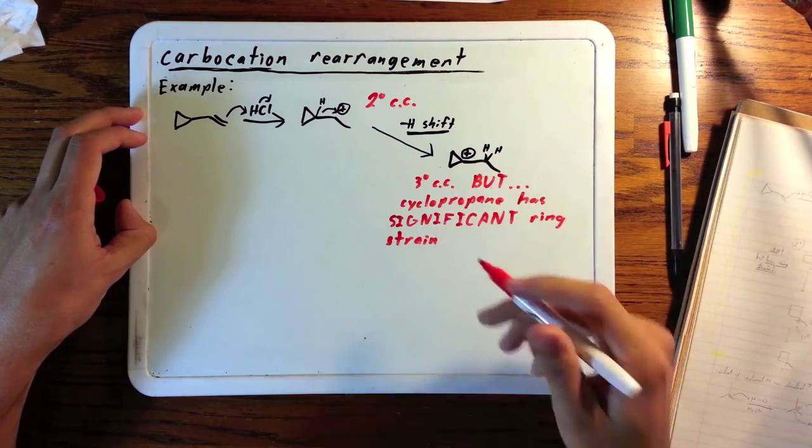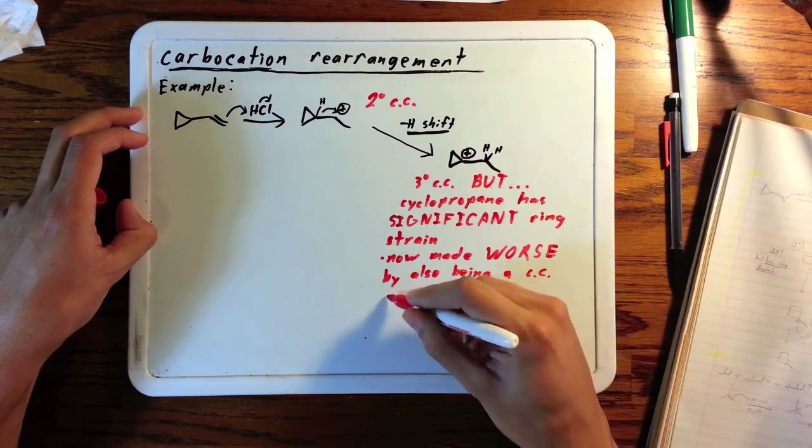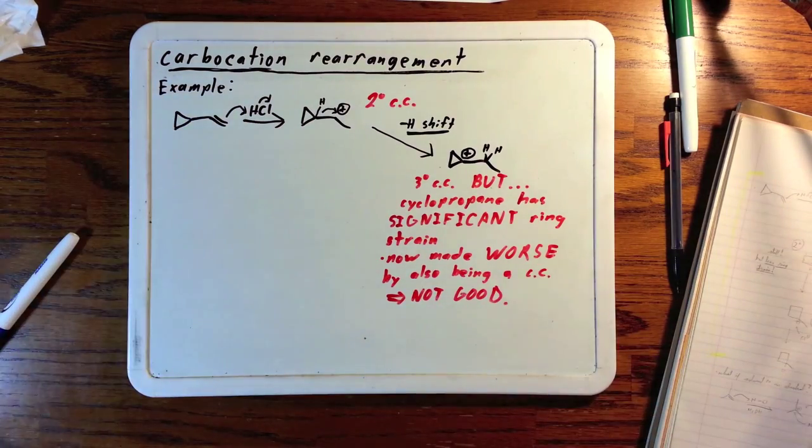When you add to that it being a carbocation, it's extremely unstable. So even though we went from secondary to tertiary, this is not good.